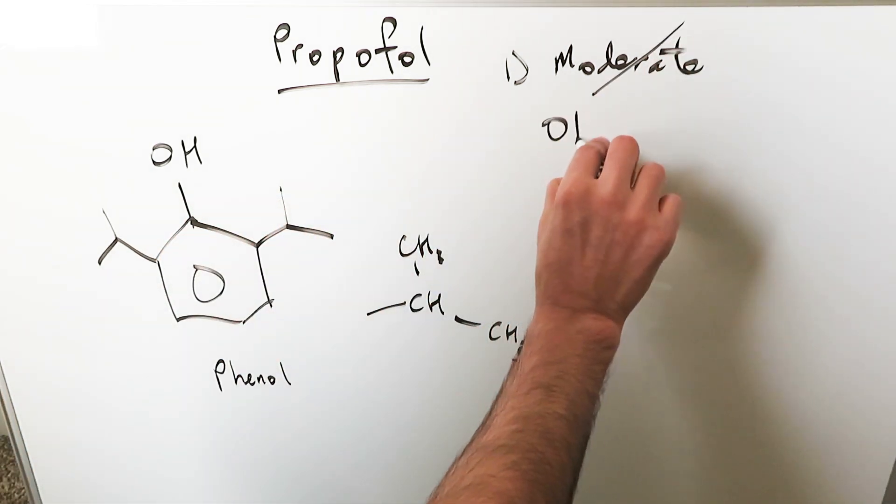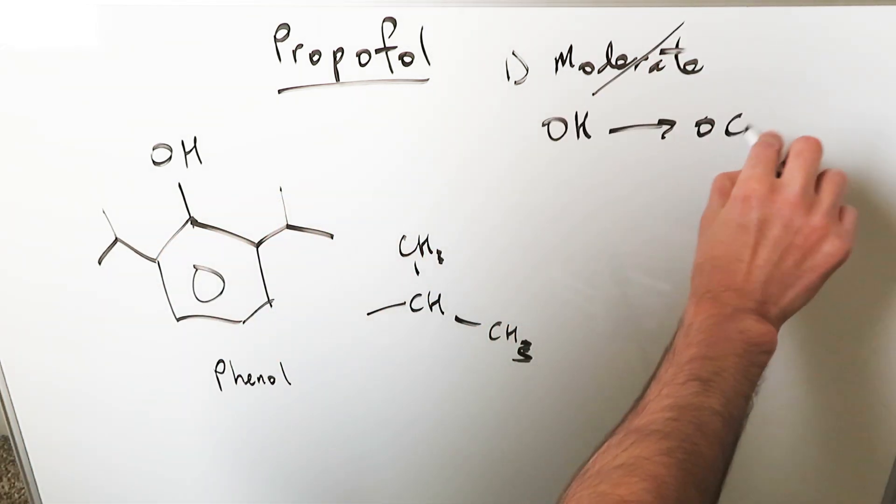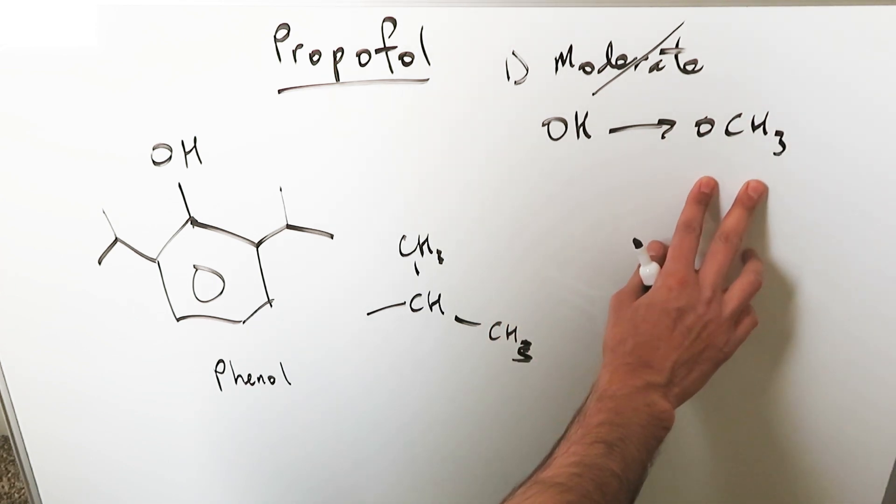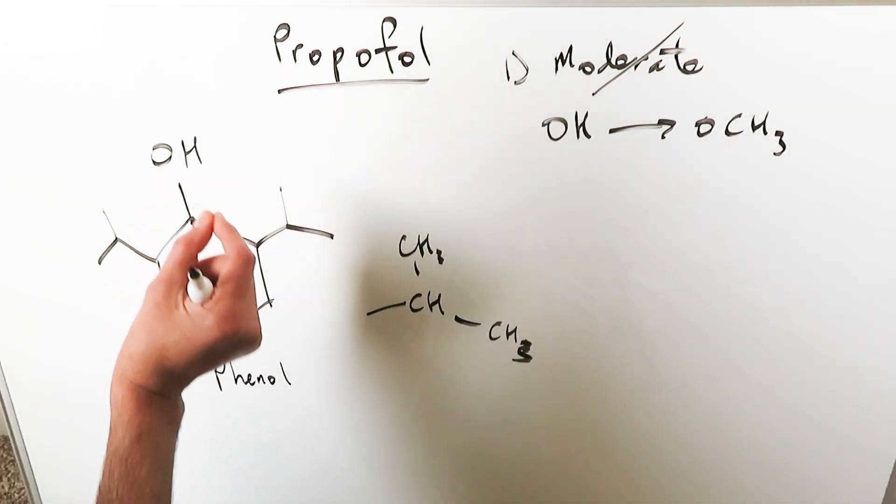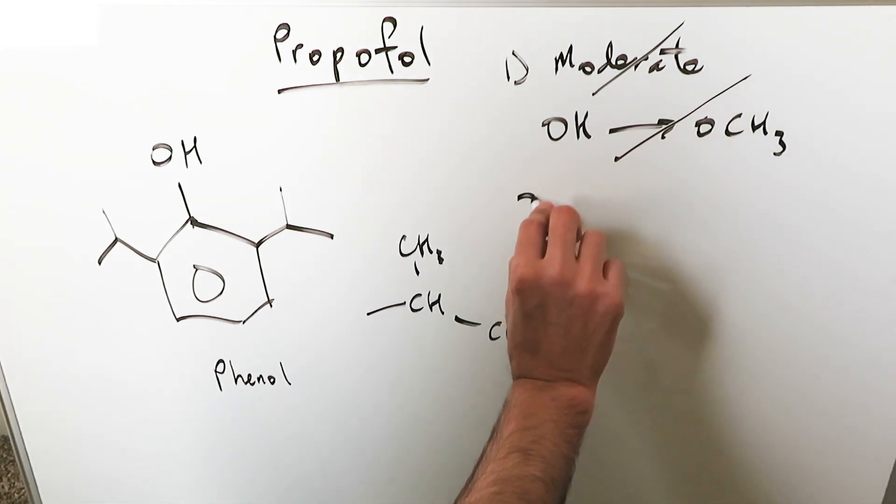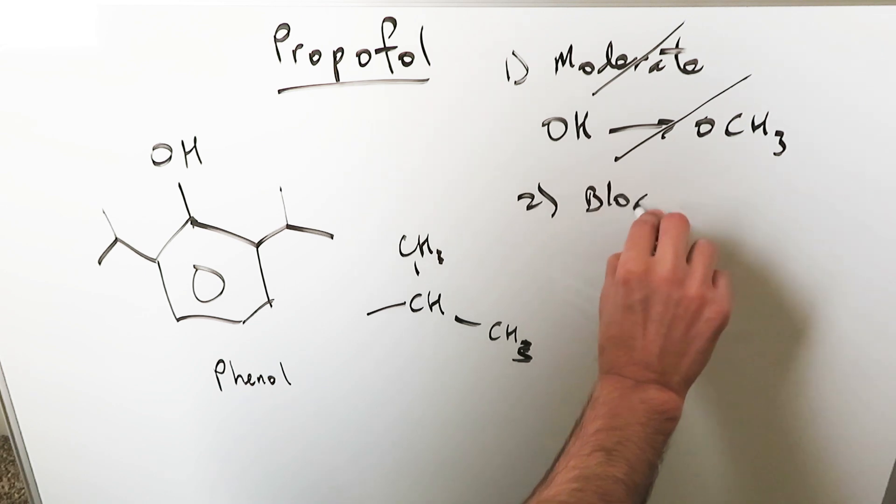We don't want to moderate the hydroxyl group by converting it into a methoxy benzene by converting hydroxyl into ether. You make that ortho para direction of this less, you make it weaker, and then you have to do multiple steps. We don't want to moderate but we certainly want to do a blocking group here.